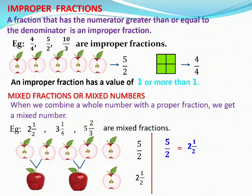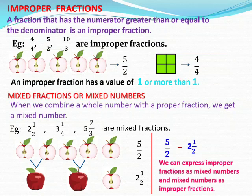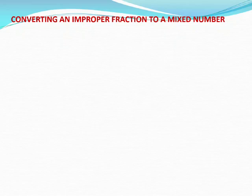So the conclusion is that we can express improper fractions as mixed numbers and mixed numbers as improper fractions. We can convert an improper fraction to a mixed number and a mixed number to an improper fraction. So how can we convert if the figure is not given? Let us see the steps.